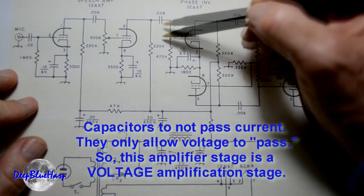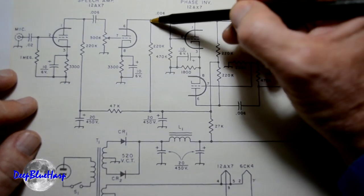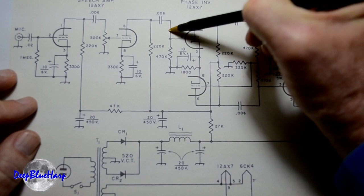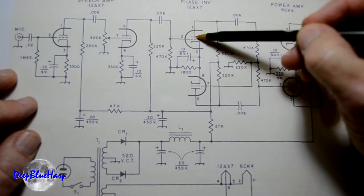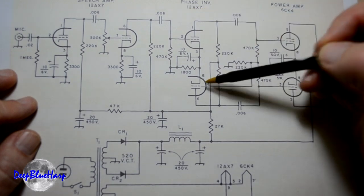And then, a lot of folks at this point, you'll see in a Fender, Marshall, Box, whatever, they'll put a tone stack in here, they'll put a volume control here, they feed it to the phase inverter, in which case, this is again another 12AX7.